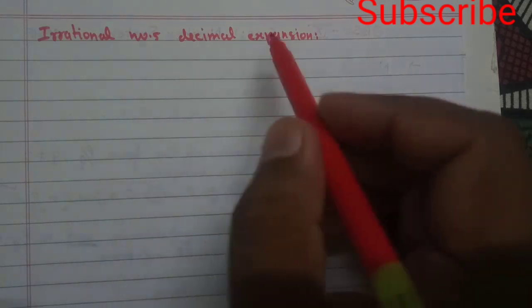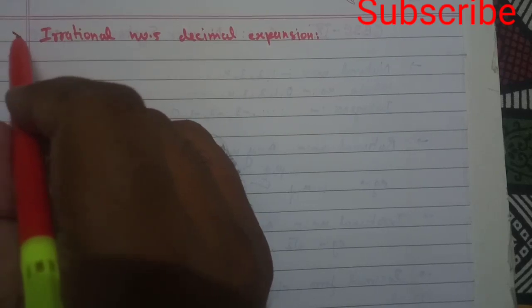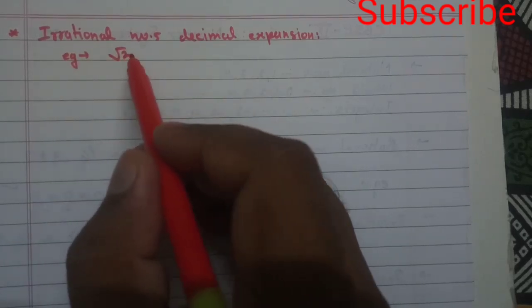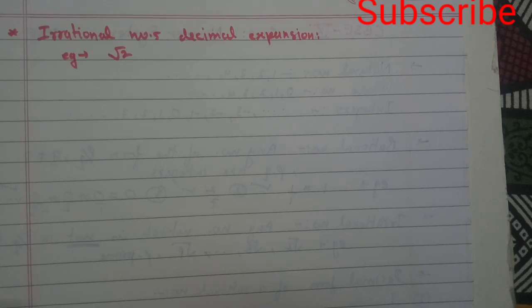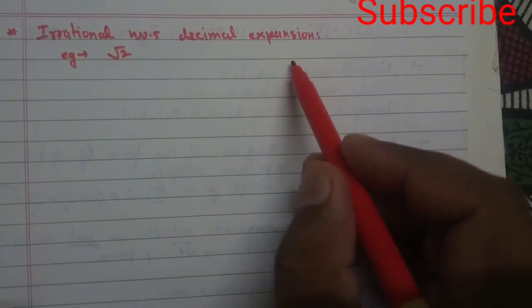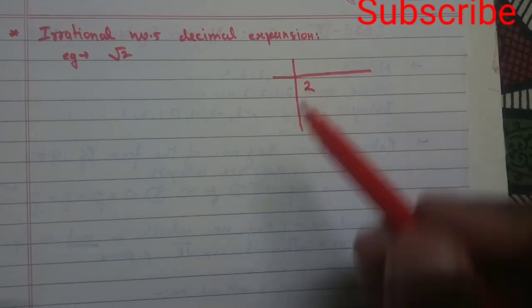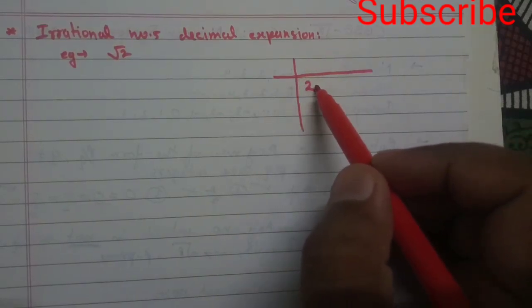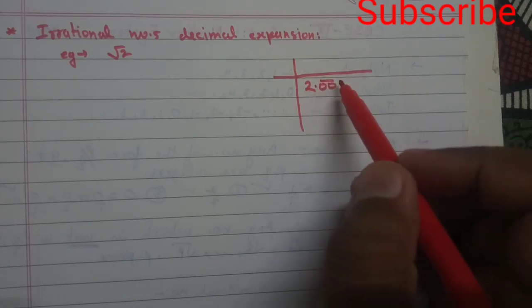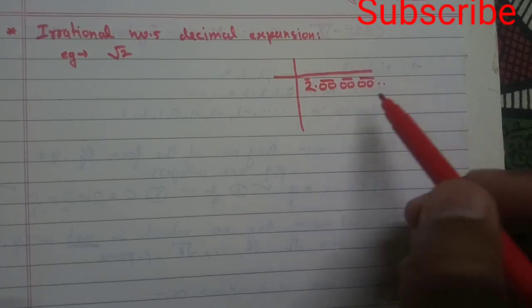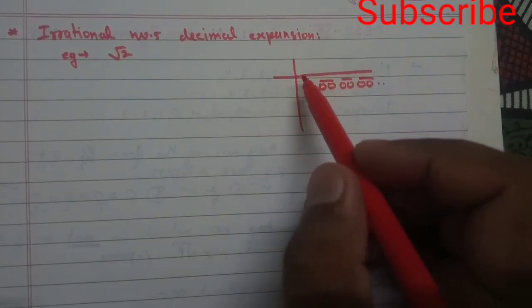Now let's talk about the decimal expansion of irrational numbers. As I mentioned earlier, root 2 is an irrational number. If I find its decimal expansion, let's see what value comes. We will use the long division method you studied in Class 8 to find the value of root 2.